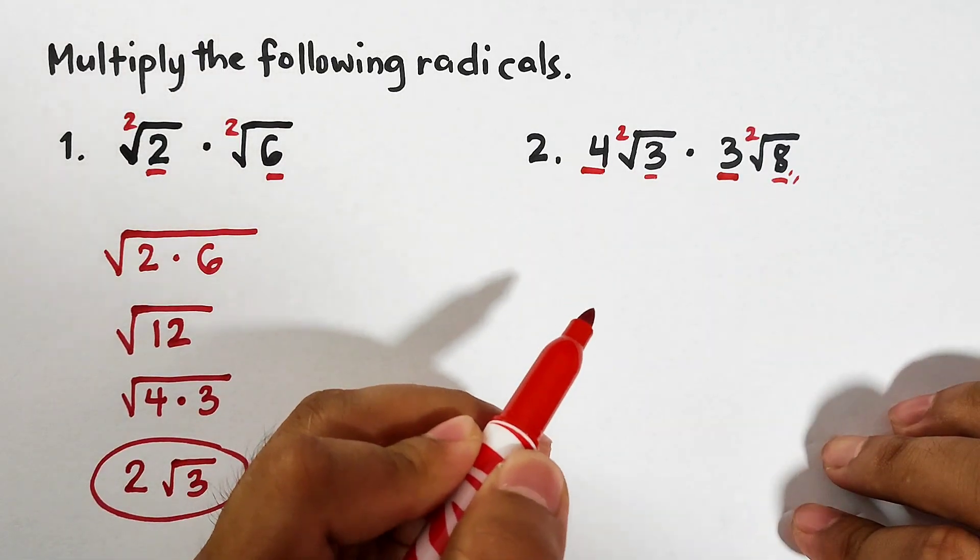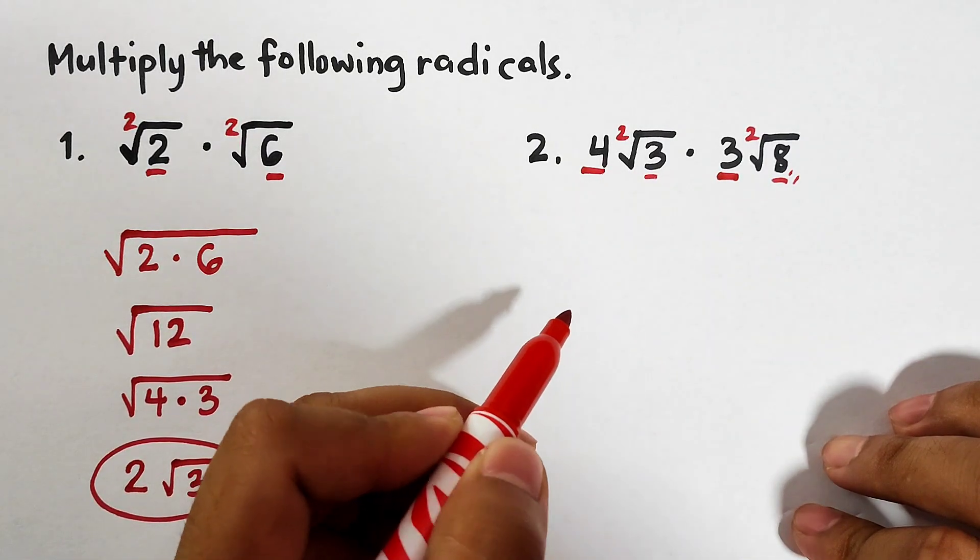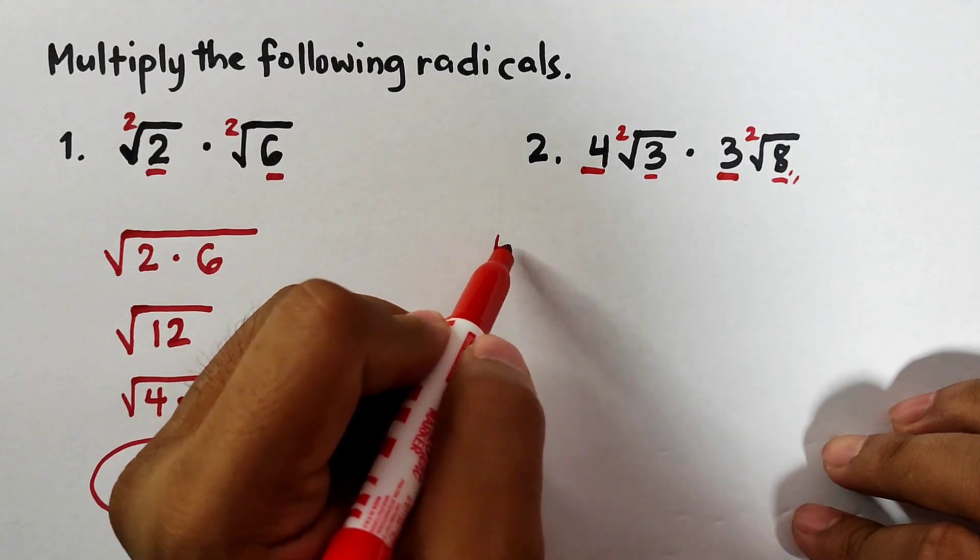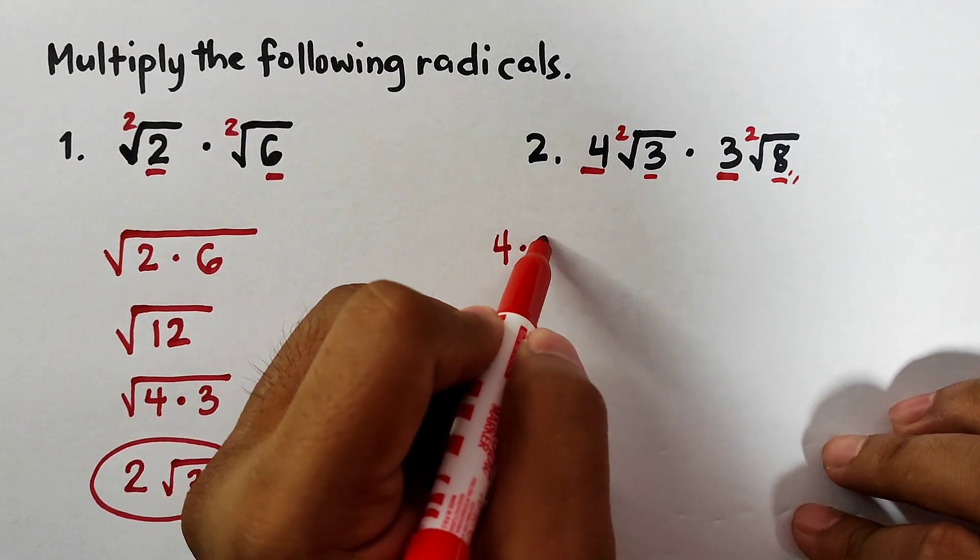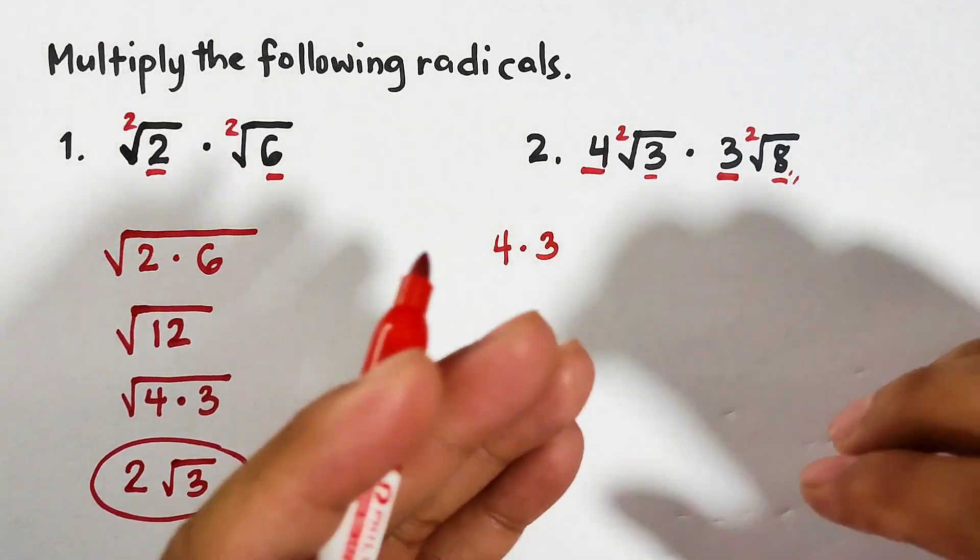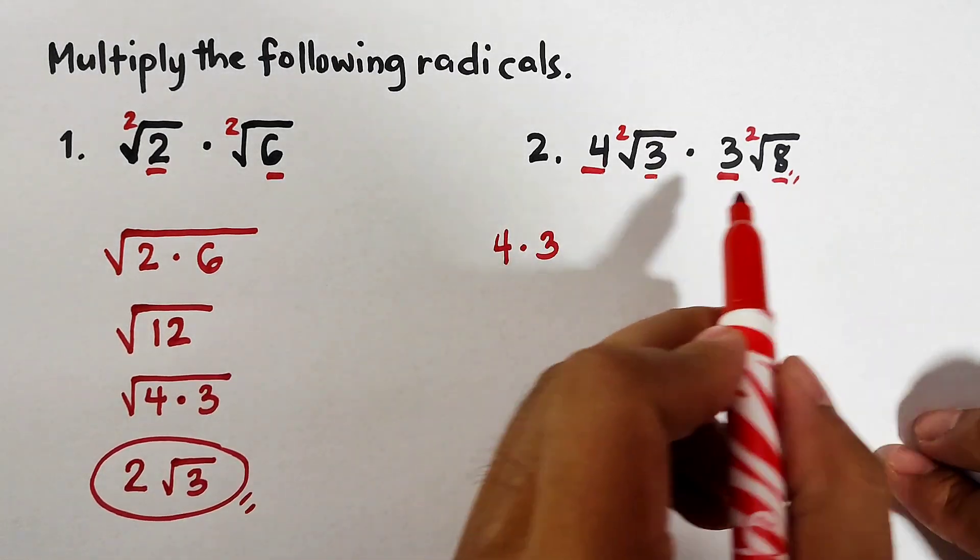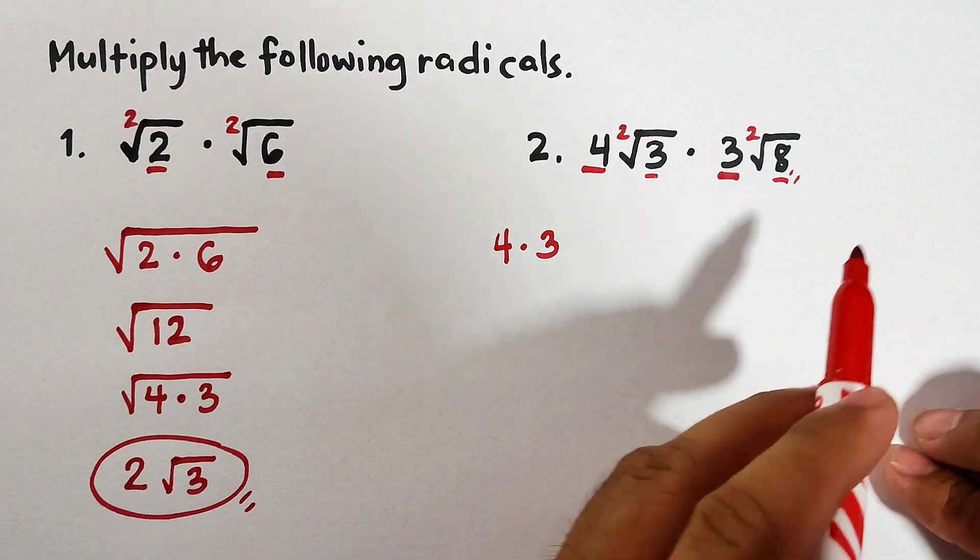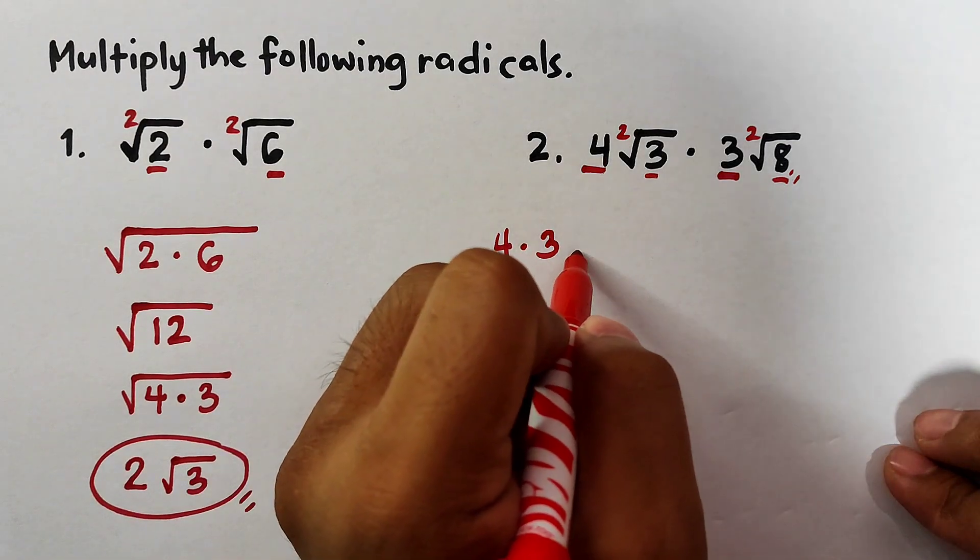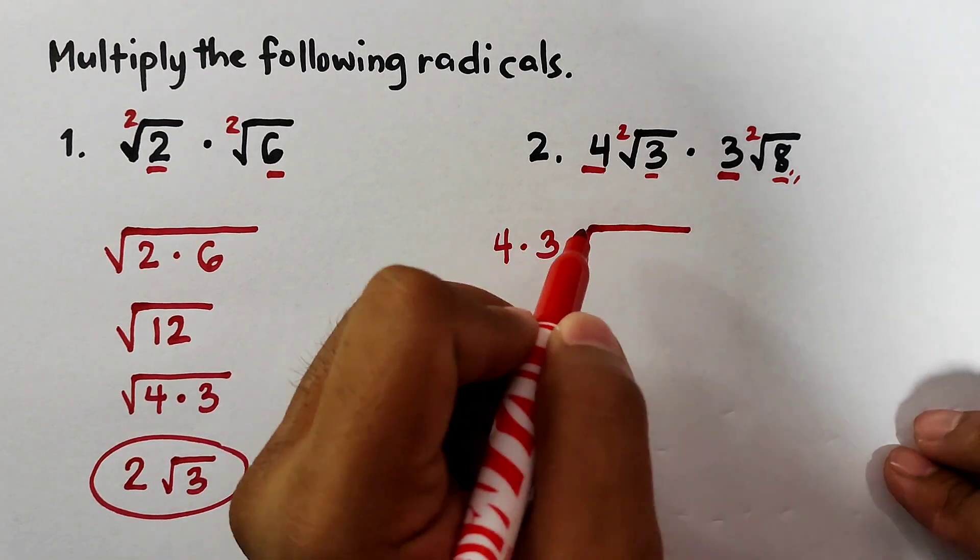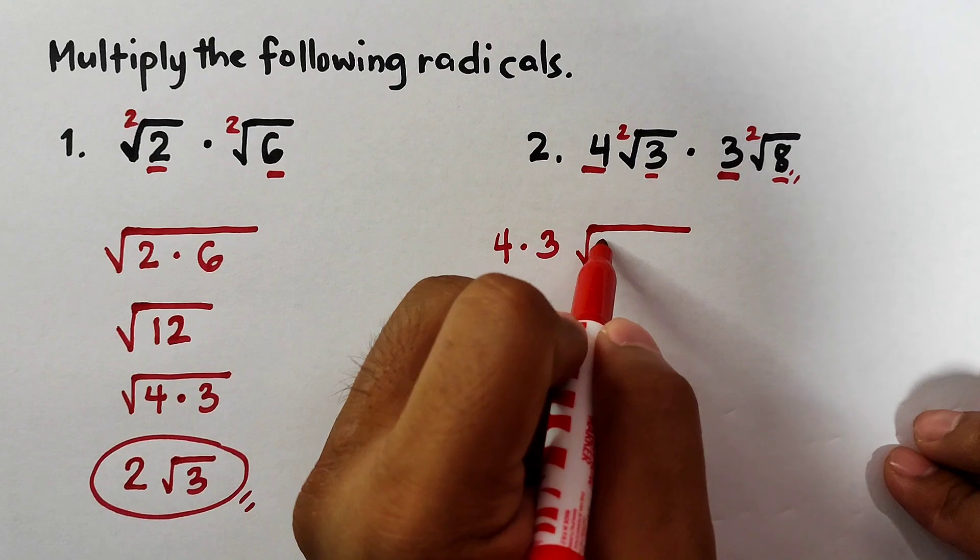So first we will go with multiplying the constants or the coefficients outside the radical sign, and it goes like this: 4 times 3. Again, I'm just multiplying the coefficients outside the radical sign. Next we will deal with the radical signs or the radicals.